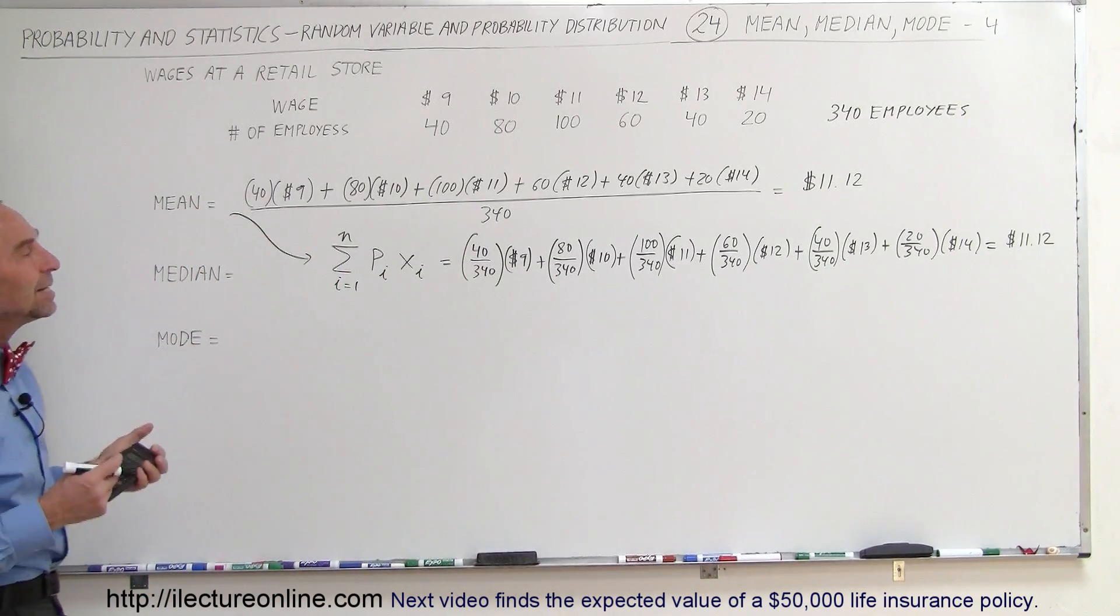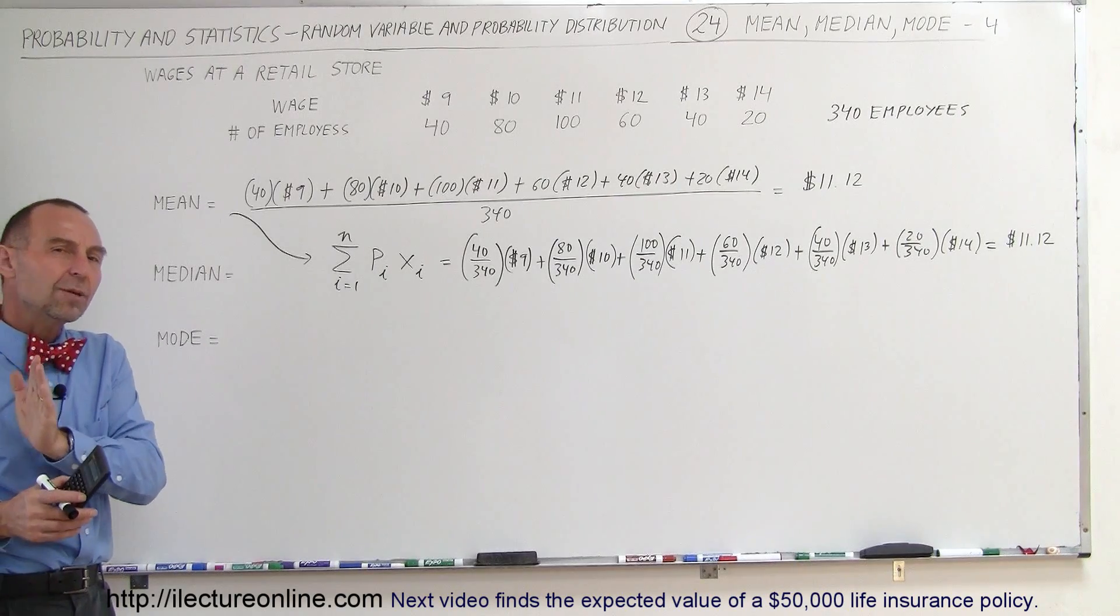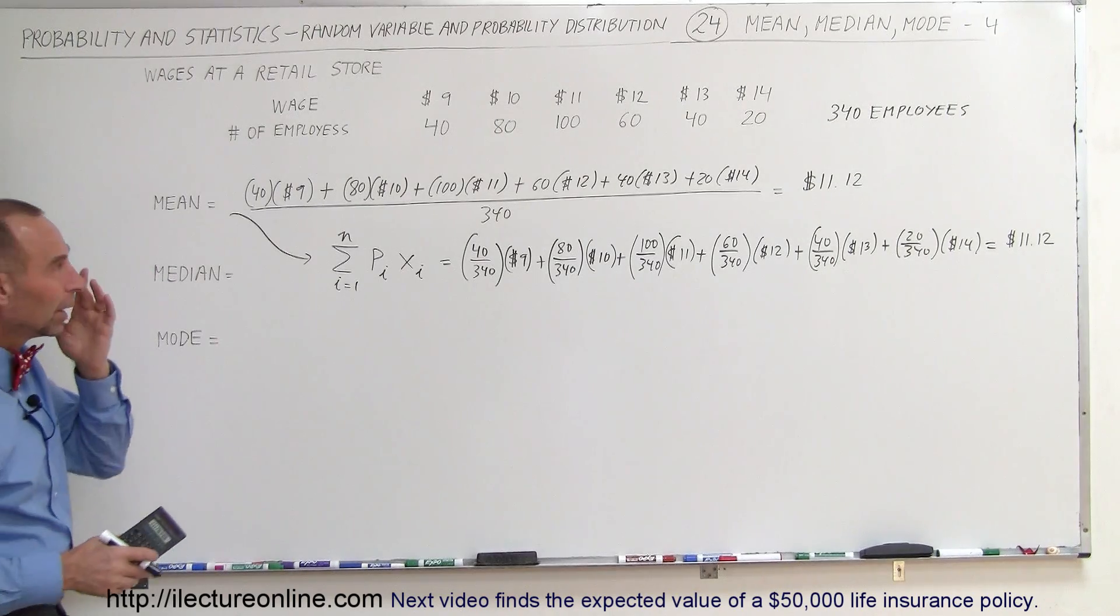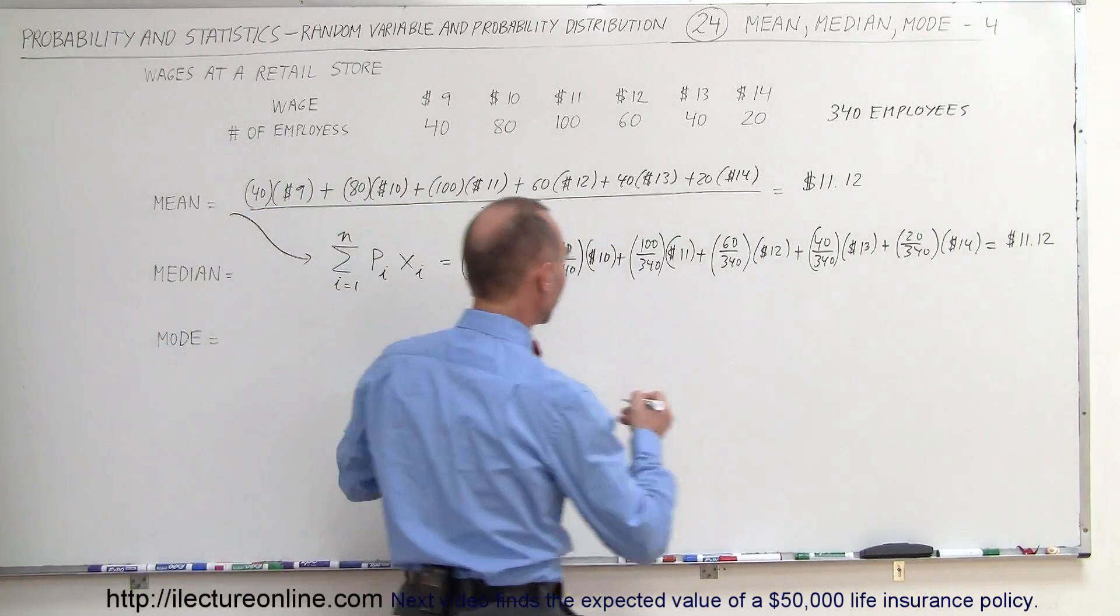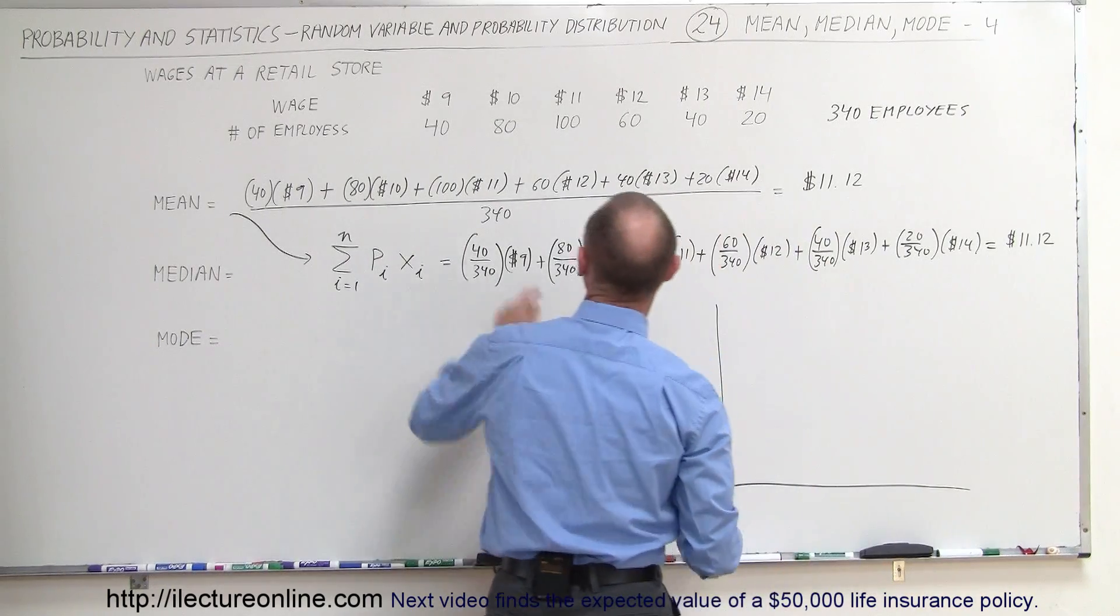So now we're going to find the median. The median is the middle value, meaning there's just as many employees that earn less and just as many employees that earn more. Now, if we chart that out, it might help a little bit. So let's go ahead and make a histogram of this.